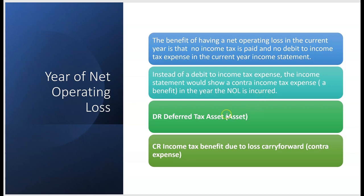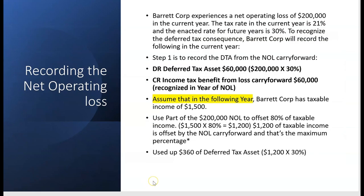In the year of the NOL, you debit deferred tax asset and credit income tax benefit due to loss carry forward. So the balance sheet will show an asset, and the income statement will show a contra expense — the opposite of an expense — meaning there would be no income tax expense in the year of an NOL.